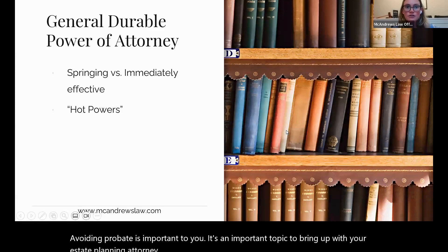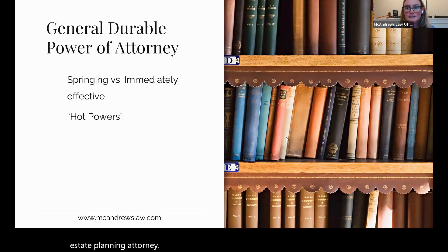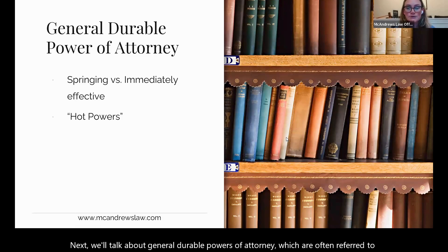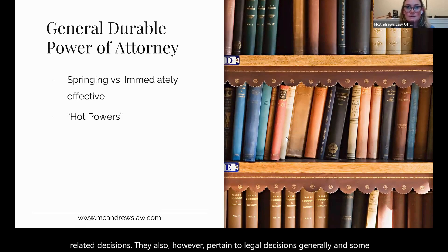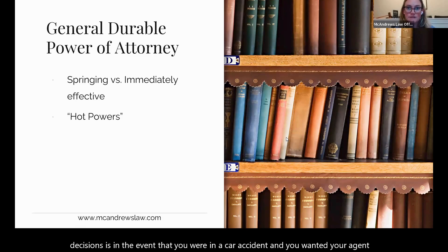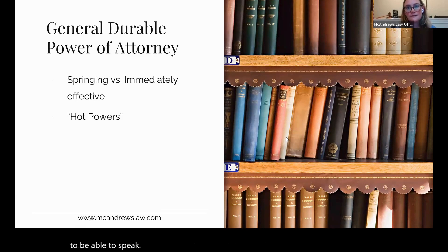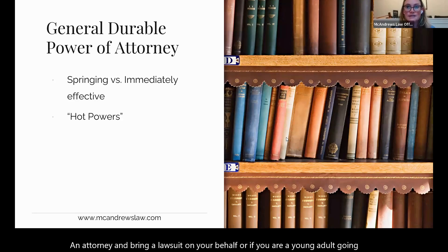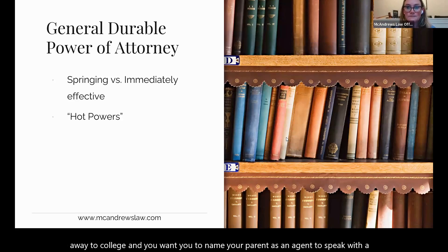Next, we'll talk about general durable powers of attorney, often referred to as financial powers of attorney because they're mostly used for banking and money-related decisions. They also pertain to legal decisions generally. Examples include: if you were in a car accident and wanted your agent to speak with an attorney and bring a lawsuit on your behalf, or if you are a young adult going away to college and want to name your parent as an agent to speak with the college, handle financial applications, and have access to your grades.